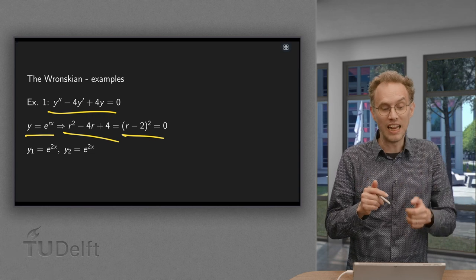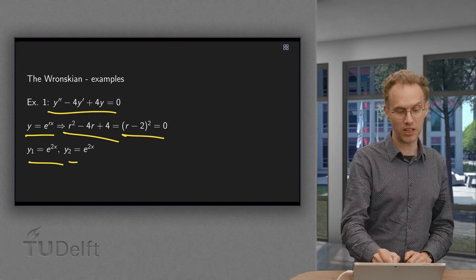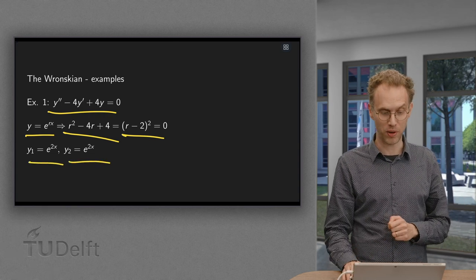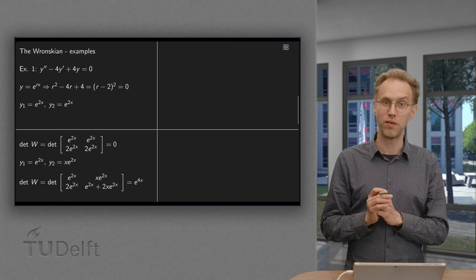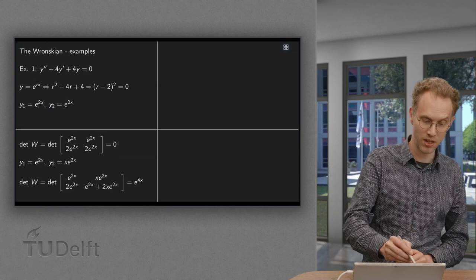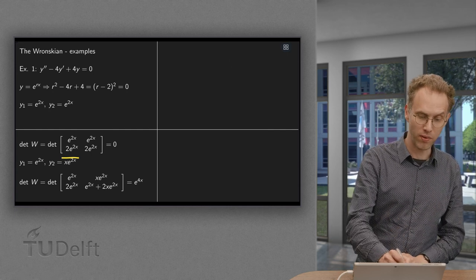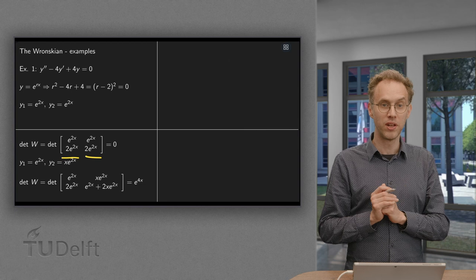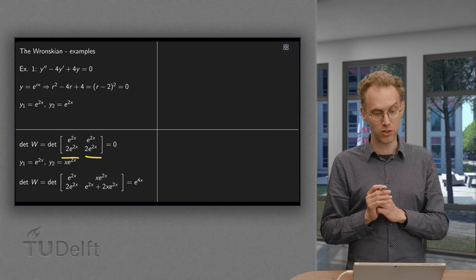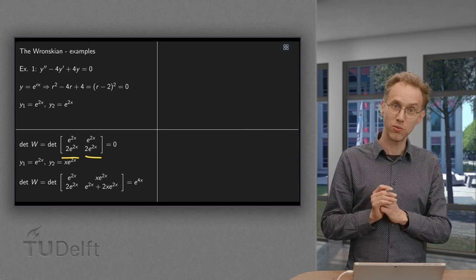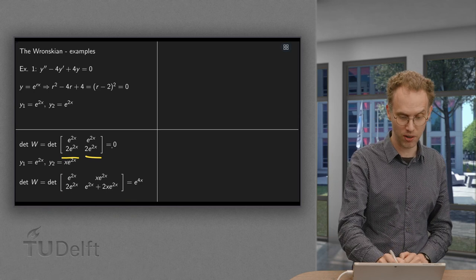So let's try naively to put e^(2x) and e^(2x) as y₁ and y₂. What happens if you plug them in the Wronskian? y₁ in the first column with y₁ and y₁', y₂ and y₂' in the second column. If you compute the determinant, we get 2e^(4x) - 2e^(4x) = 0.